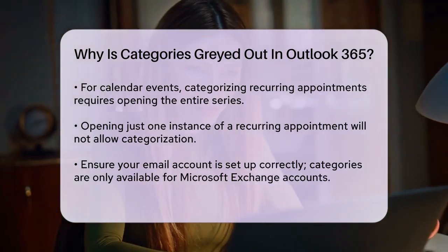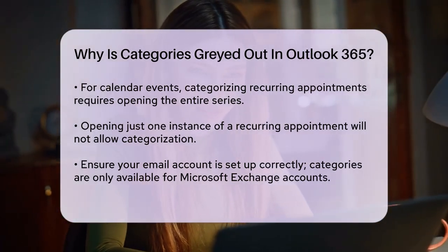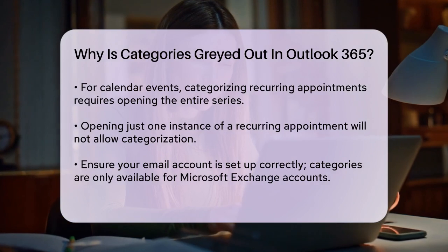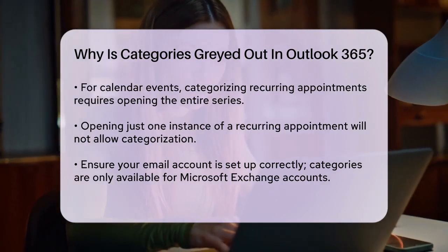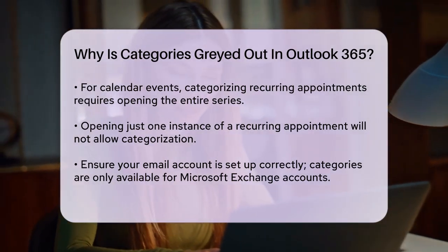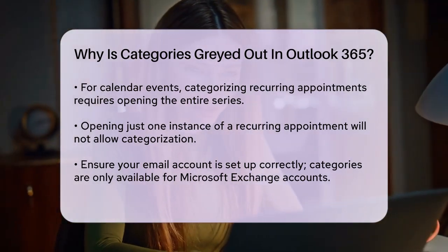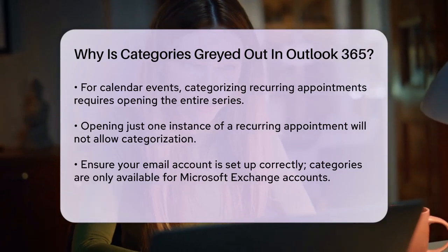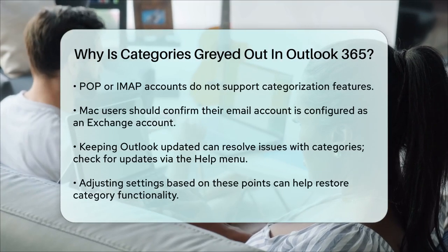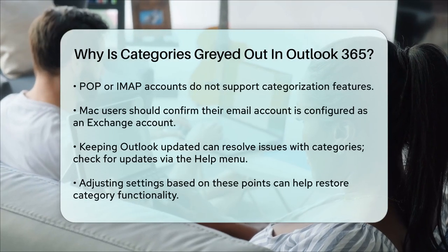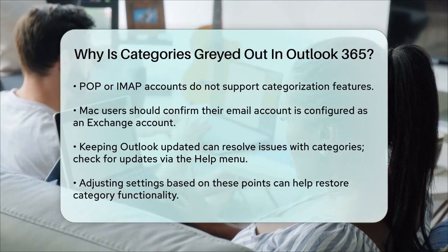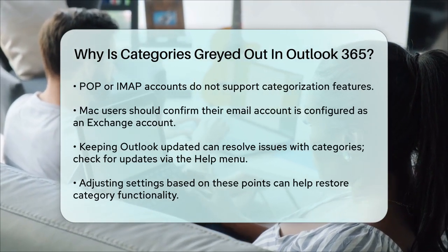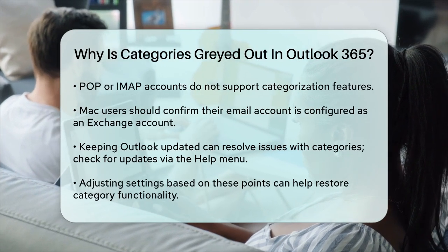Additionally, make sure your email account is configured correctly. Categories are only available for Microsoft Exchange accounts, not for POP or IMAP accounts. If you're using a Mac and the new version of Outlook, ensure that the email account you want to categorize is set up as an Exchange account. You can check this by looking at your account settings in Outlook.